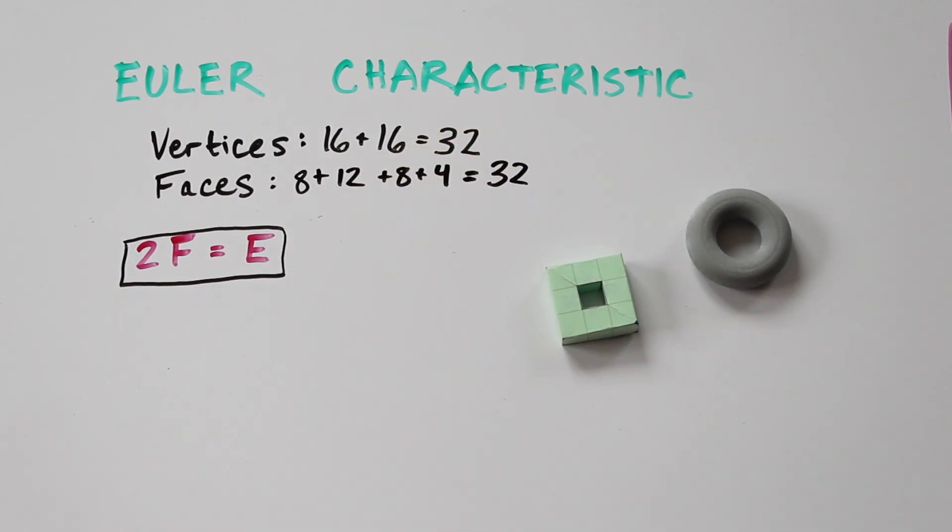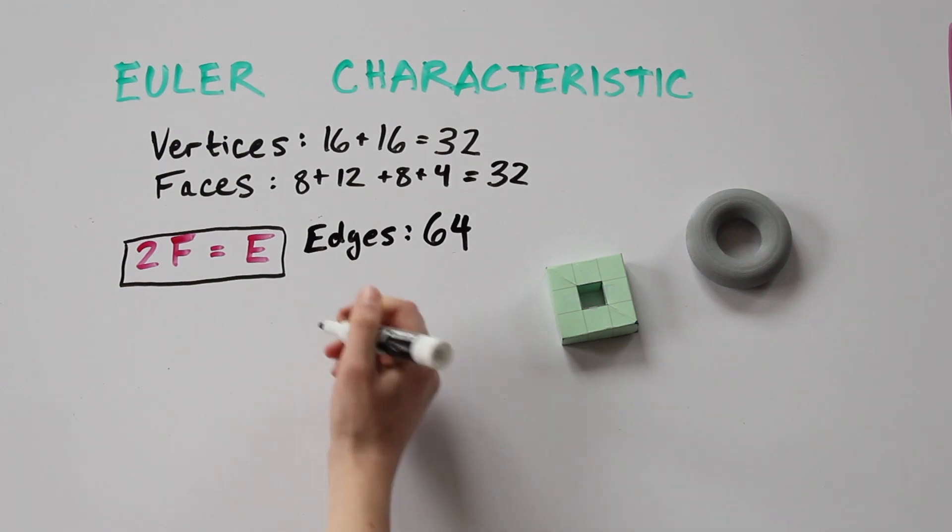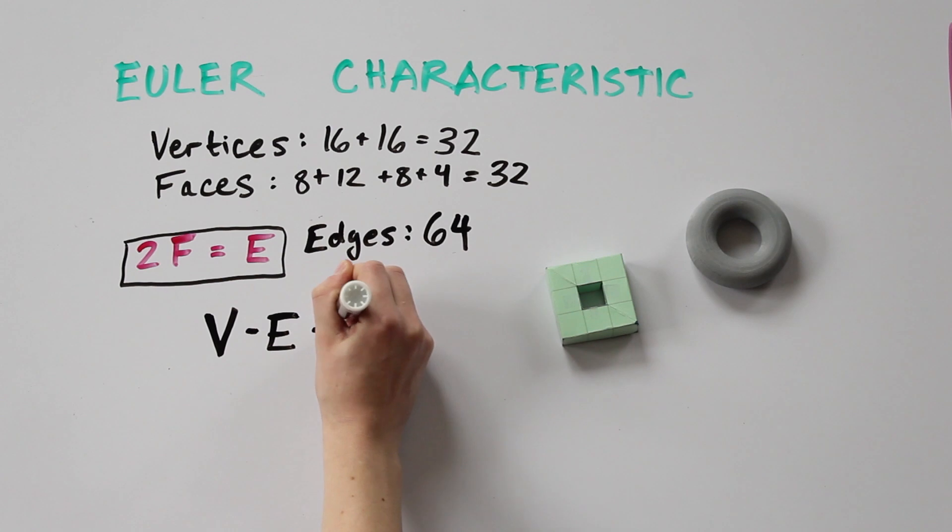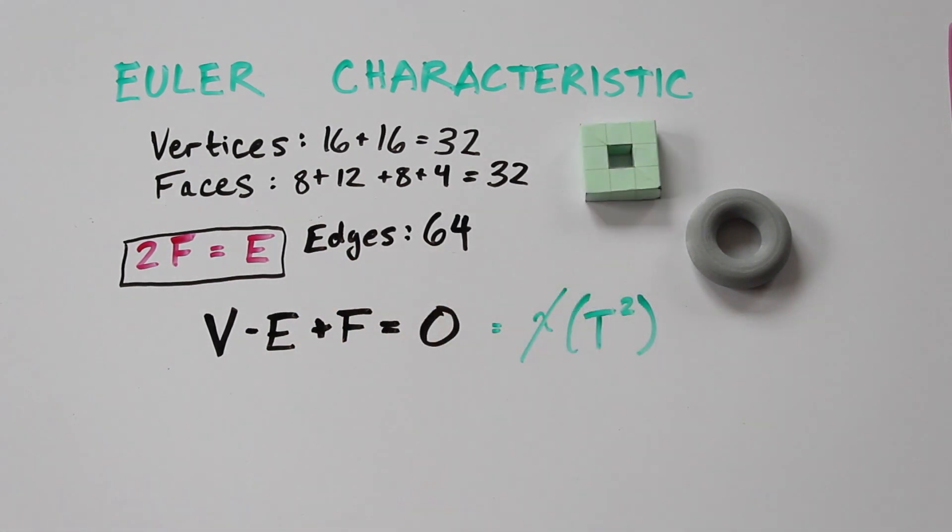So F is 32, and E is 64, and so V minus E plus F is 0. So the Euler characteristic of the torus is 0. We denote the torus as T2, because this is the two-dimensional torus.